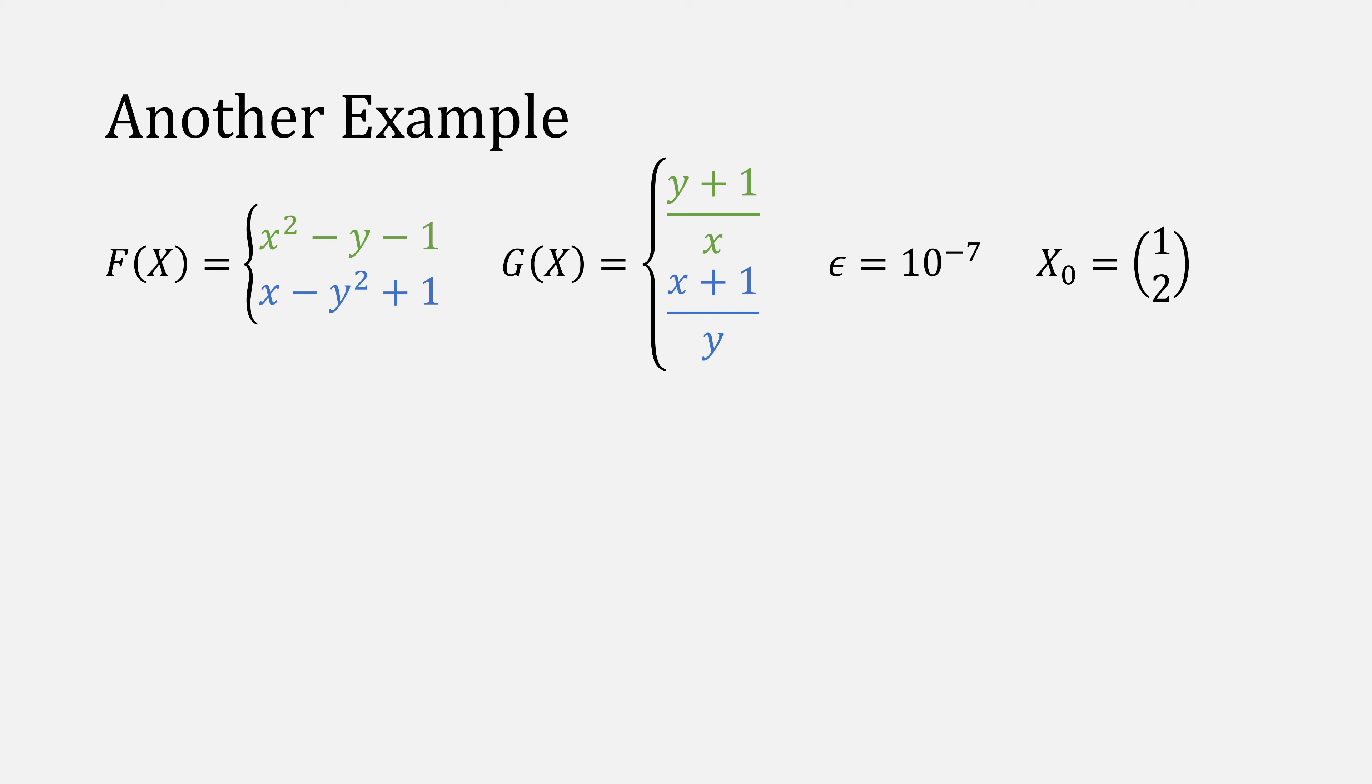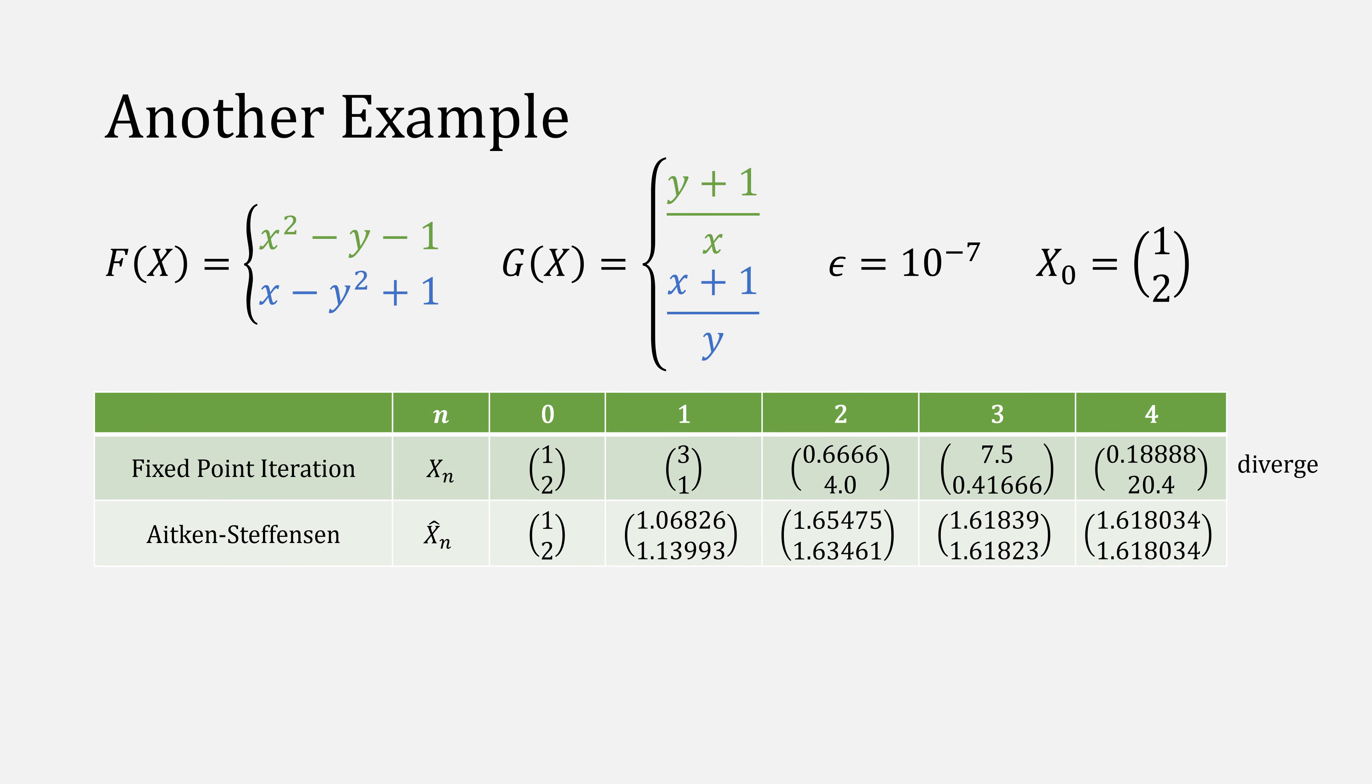Let's look at another example, but this time with a different g of x. With normal fixed-point iteration, this ends up diverging. When we apply Aitken-Stephenson's, this actually converges in four iterations.